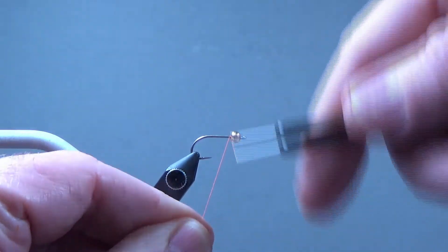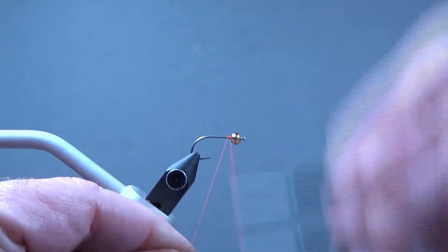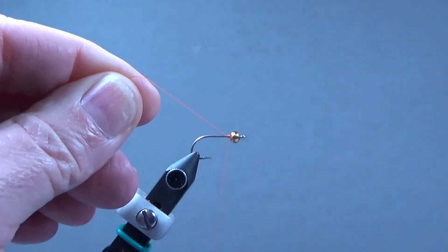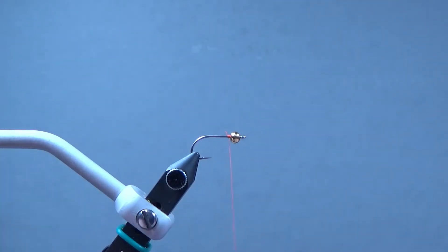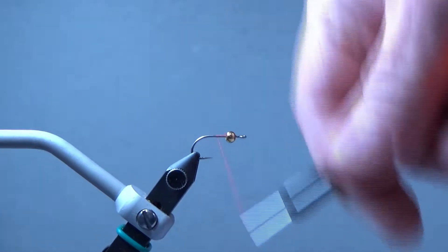So I'm going to start my thread back here behind the bead. Just build up a little bit of a dam just to kind of hold it in place. And we'll take our thread back to the bend of the hook.